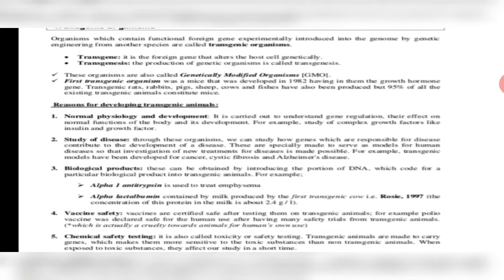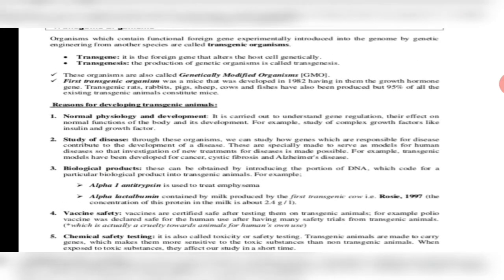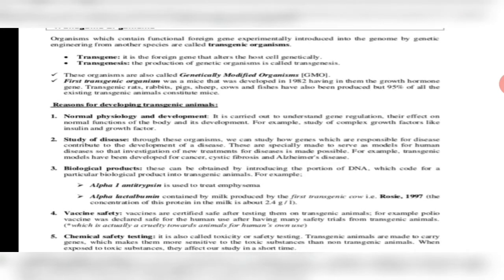Why do we create or use transgenic organisms? There are five main reasons. First, to check normal physiology and development, and to understand gene regulation — how we can regulate a gene, over-produce, under-produce, have no production, or proper production. Second, the study of disease; for example, in transgenic models we have studied cancer, cystic fibrosis, Alzheimer's, etc.